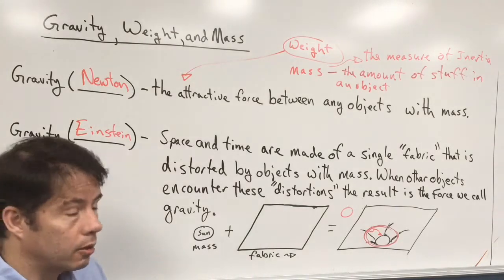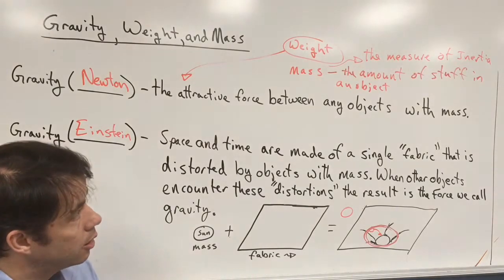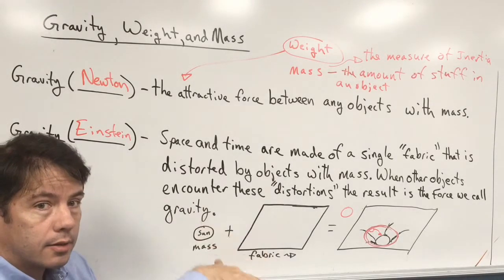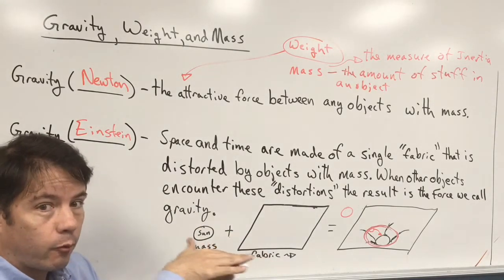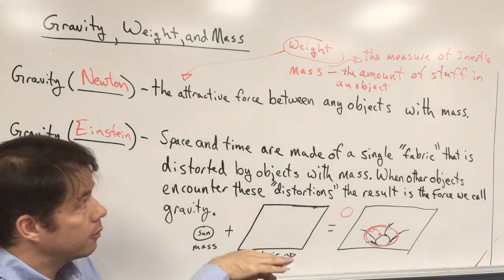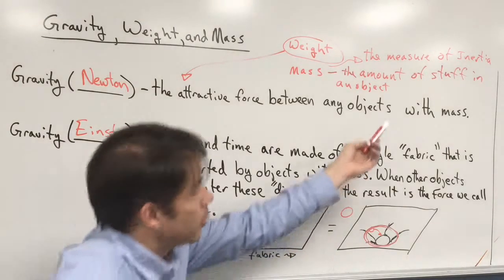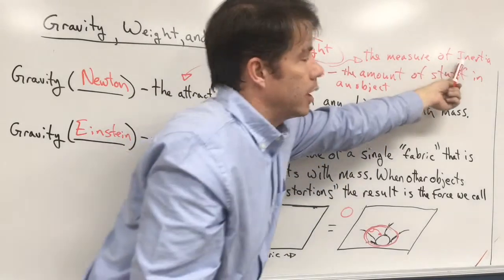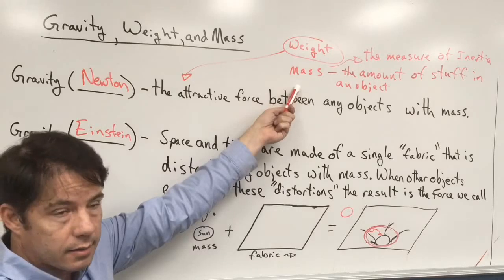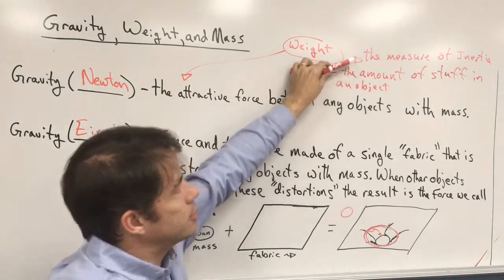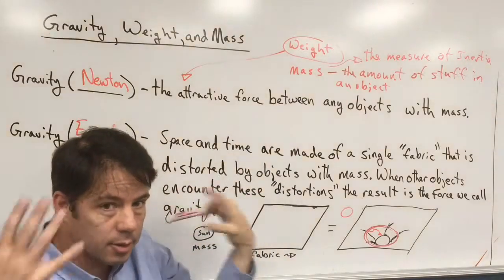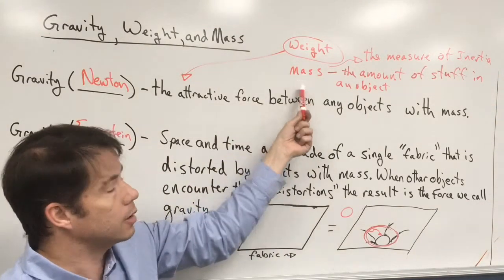But when we did our lab with the cart and we set the weights on it, as we added more weights and we used the same force to push it, it wound up accelerating at a slower rate. It was harder to push. So it had more stuff, it had more inertia, in other words, it had more mass. So both of these definitions are good to conceptually grab a hold of what mass really is.